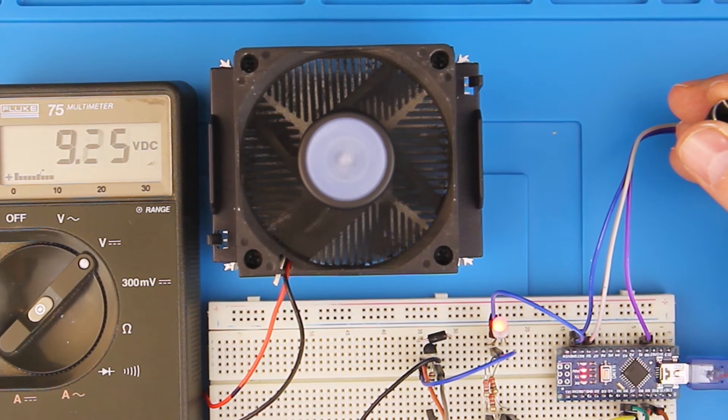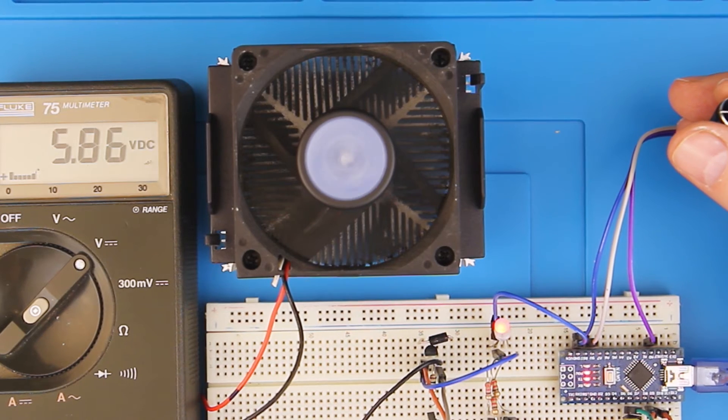Since we're using the same code from above, the pot will control the brightness and the fan speed.